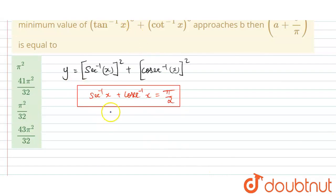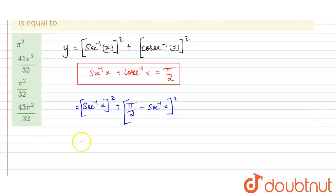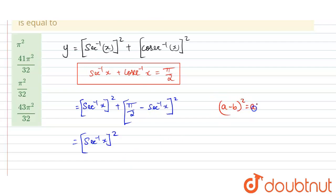So y = (sec⁻¹x)² + (csc⁻¹x)². From the identity, csc⁻¹x = π/2 − sec⁻¹x. Substituting: y = (sec⁻¹x)² + (π/2 − sec⁻¹x)². Using the (a − b)² = a² + b² − 2ab formula to expand the second term.